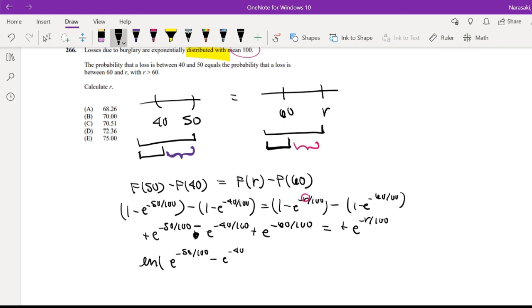Negative 40 over 100 plus e to the negative 60 over 100 is equal to negative R over 100. So I'm going to multiply both sides by positive, negative 100.